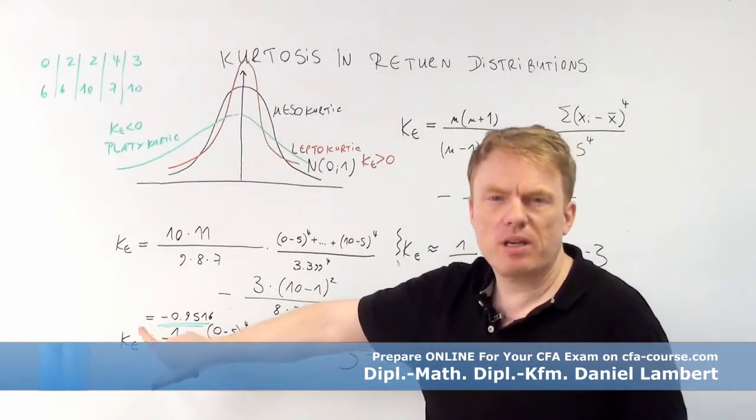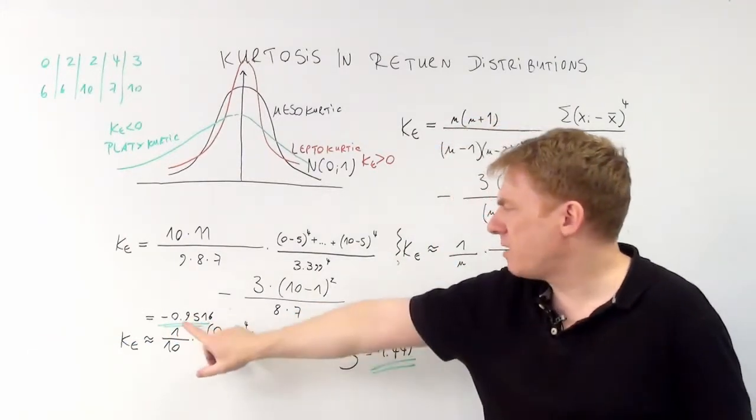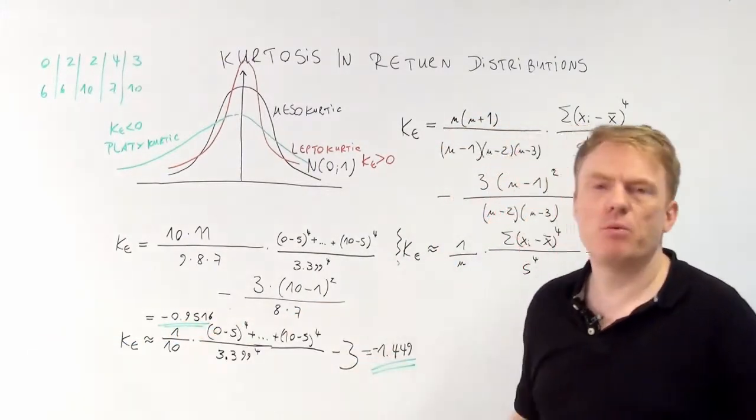We get the result k sub e of negative 0.9516.